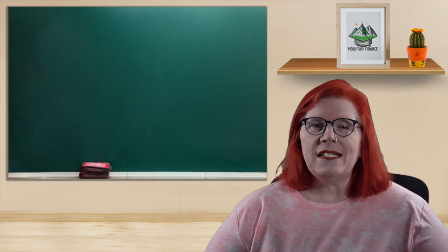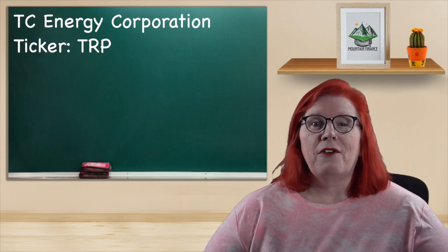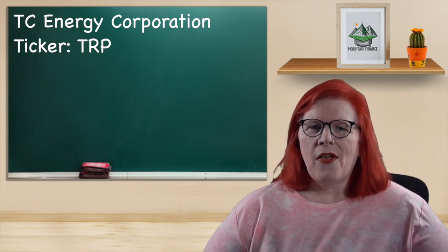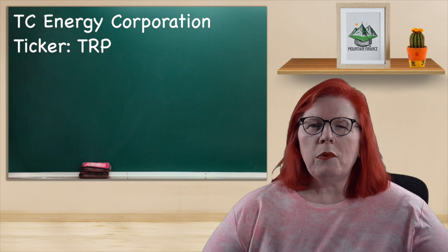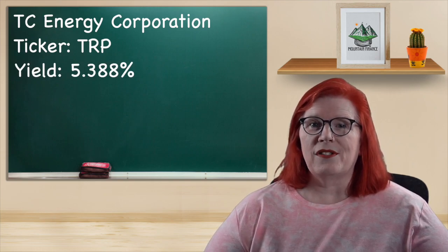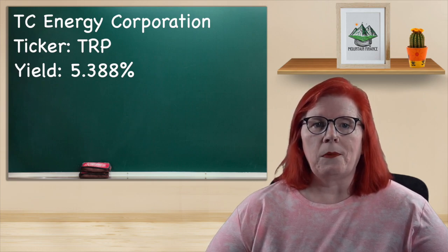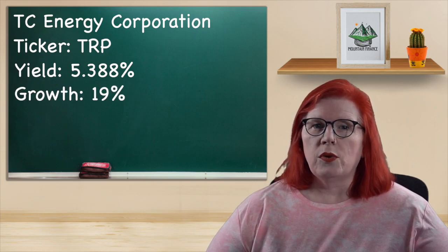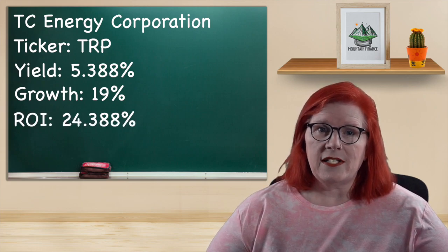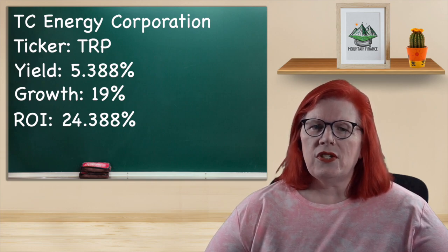Up first we have TC Energy Corporation with a ticker of TRP. They are an energy infrastructure company with pipeline and power assets throughout North America. Their dividend yield is 5.388 percent in the form of a quarterly dividend of 90 cents per share. Their growth for last year was 19 percent. That makes their total ROI, return on investment, 24.4 percent. That is not too shabby.